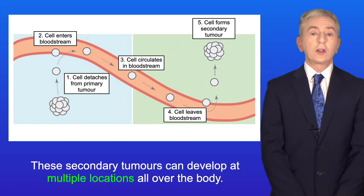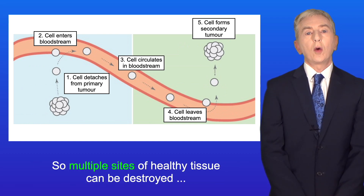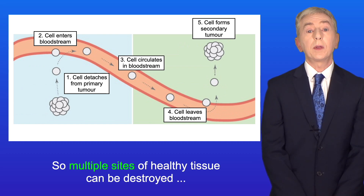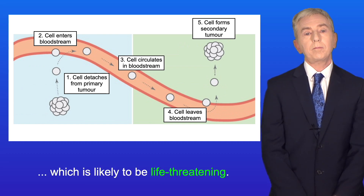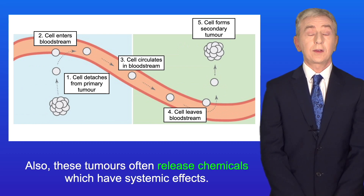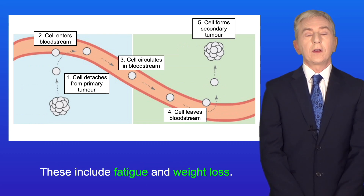Secondary tumours can develop at multiple locations all over the body, so multiple sites of healthy tissue can be destroyed, which is likely to be life threatening. Also, these tumours often release chemicals which have systemic effects — in other words they affect the whole body — including fatigue and weight loss.